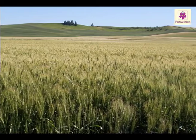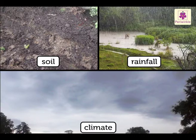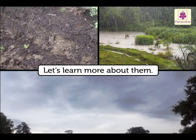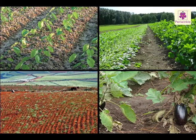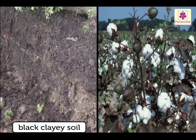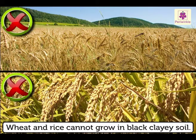The crops grown in a particular place depend on the soil, rainfall and the climate of that place. Soil is a key factor — crops can grow only in the soil. The type of soil determines the type of crop that can grow in it. For example, black clay soil is good for cotton, but wheat and rice cannot grow in it.